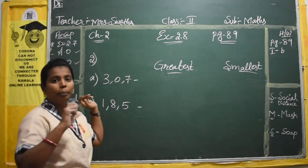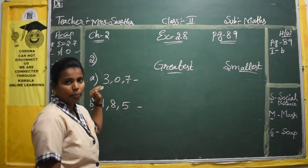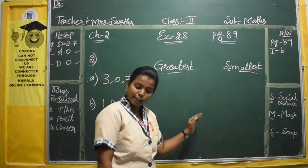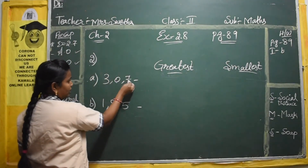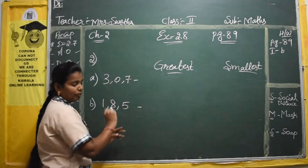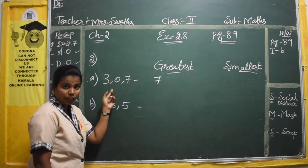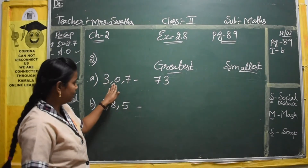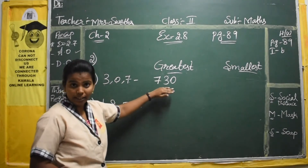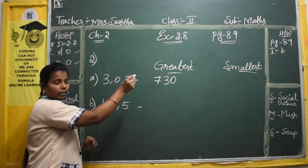If the numbers are big in the next places too, then that number becomes the biggest number. Here we have 3, 0, 7. To form the greatest number, look for the greatest digit: 7. Then from 3 and 0, the greatest is 3. The leftover is 0. So the greatest number formed with 3, 0, 7 is 730.